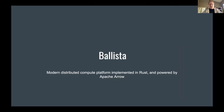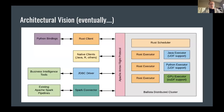That covers Arrow and DataFusion. Finally, Ballista — the thing I've been trying to build all along — is still pretty experimental and early on. Ballista takes DataFusion and makes it distributed. Basically, Ballista runs as a cluster with first-class support for Kubernetes. You can also run standalone processes or run it in Docker Compose on a single node. There are really just two executables: a scheduler and an executor. The scheduler implements the Flight protocol, so if you have a client that can talk Flight, you can send a query plan to the scheduler.